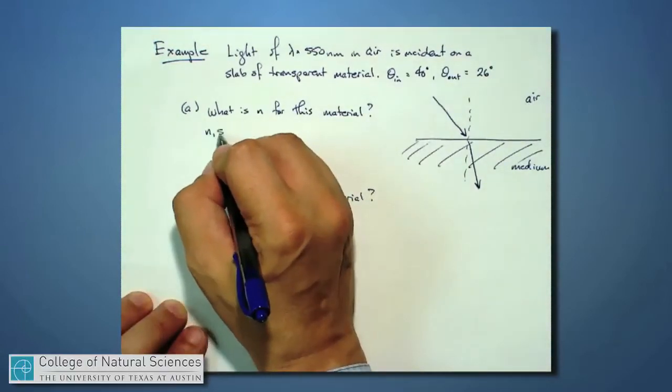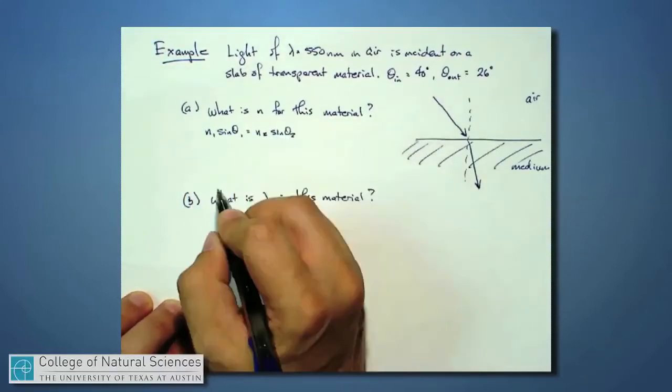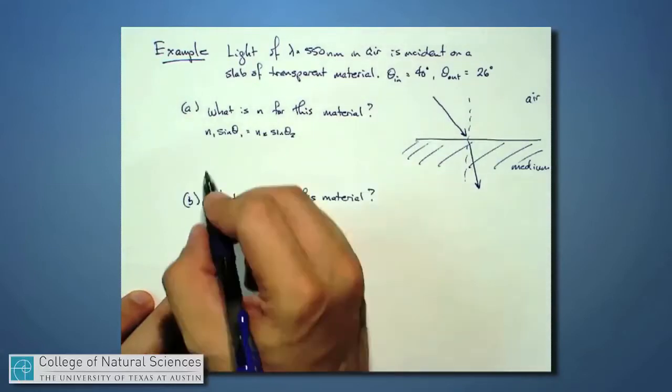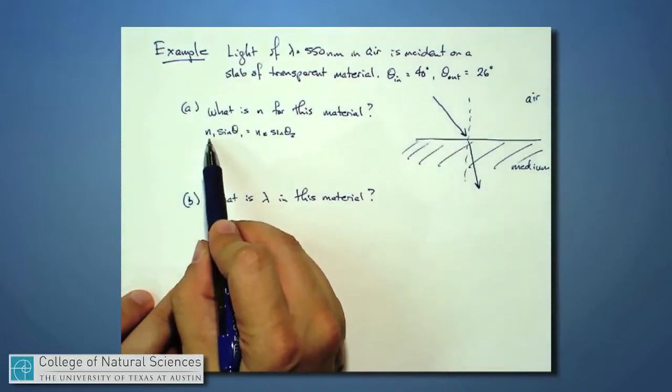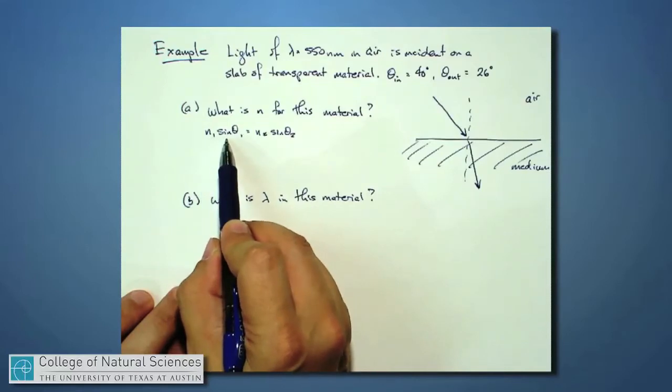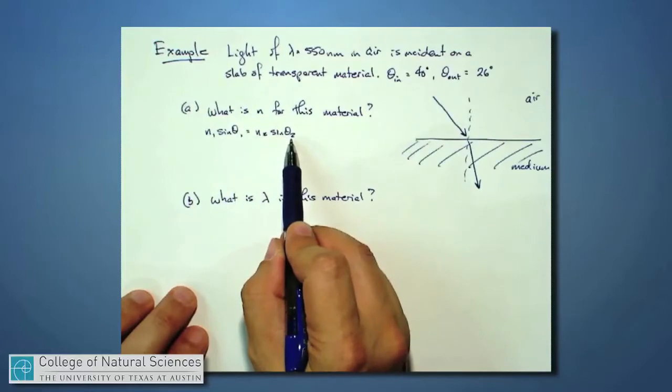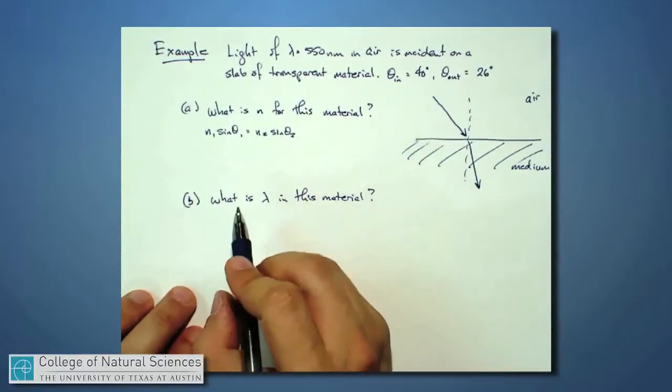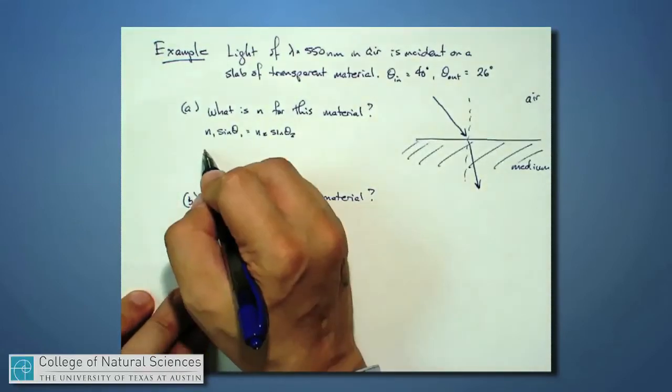I'm going to say N1 sine theta 1 is equal to N2 sine of theta 2. And I already know most things here. I know that N1 is the index of refraction of air, which is pretty close to 1. I know the incident angle is 40 degrees, I know the outgoing angle, that's 26 degrees. So the only thing I don't know in this expression is N2. I'm going to move everything over to one side of this equation so that I can have a solution for N2.